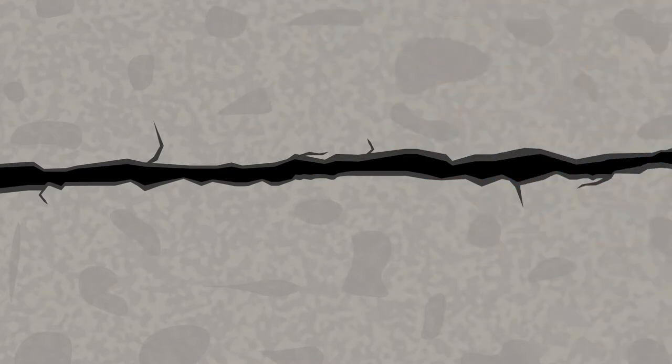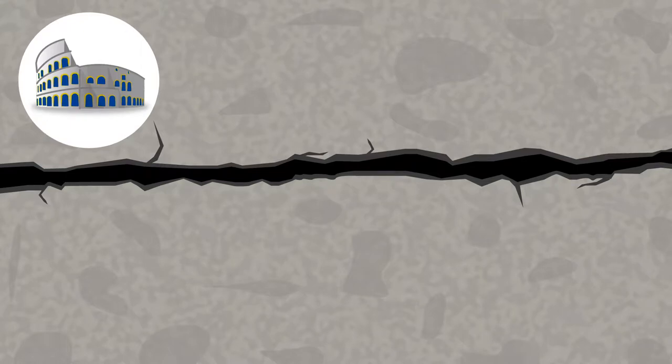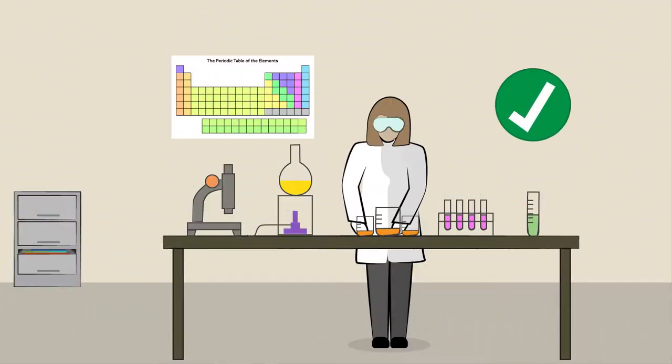To be sure, self-healing materials aren't all that new. Scientists have discovered that the lime mortar used in ancient Roman structures like the Colosseum forms tiny plate-like crystals that fill in cracks that develop over time. And researchers long ago cracked the chemistry that enables polymer networks to zip back up after damage.